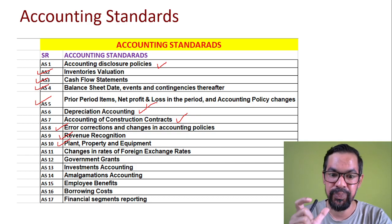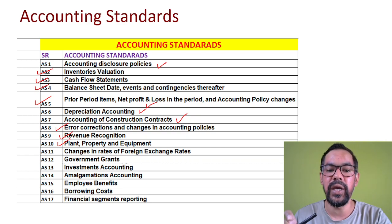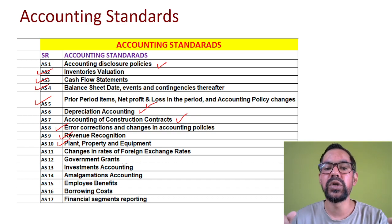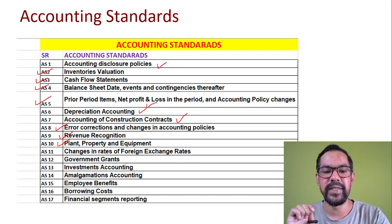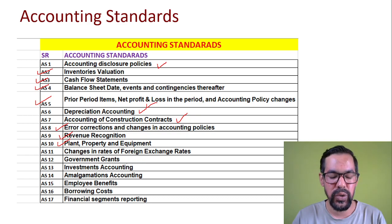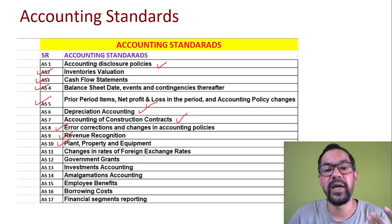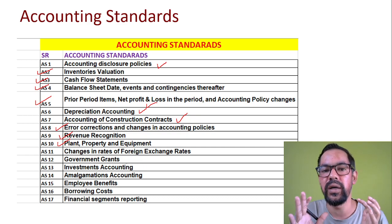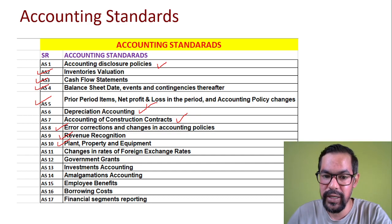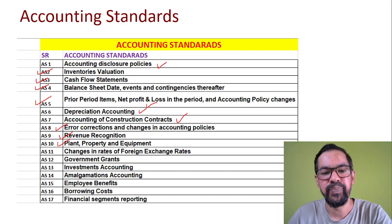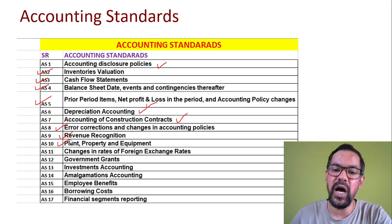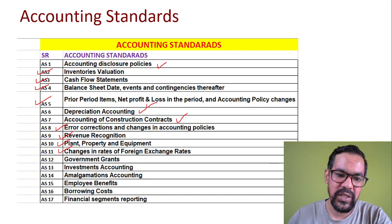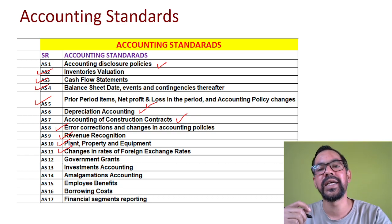Accounting Standard 10 deals with Property, Plant and Equipment, which are generally part of your fixed assets — also called accounting of fixed assets. It covers property, plant and equipment and disclosure about these particular assets as well. This includes purchase price, import duties, taxes, direct costs, training costs, and test/rent costs — all these heads come under Accounting Standard 10.